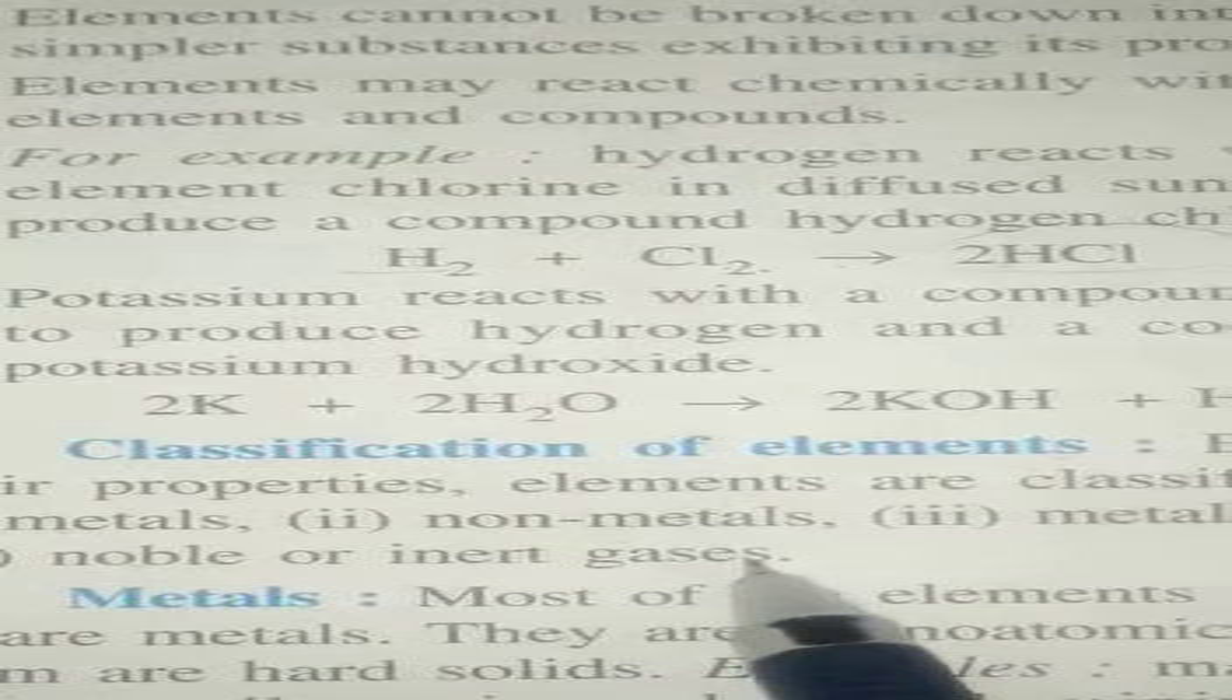Now next is the classification of elements. On the basis of their properties, elements are classified into metals, non-metals, metalloids, and noble or inert gases. So first is metals.